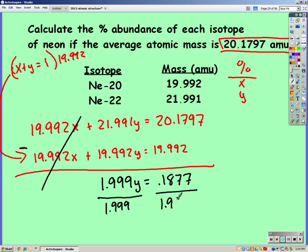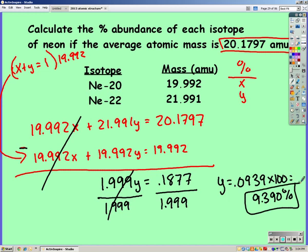Solve for y. And y is equal to 0.0939, multiply by 100 to get it a percent. And I have my percent of y, which is neon 22.